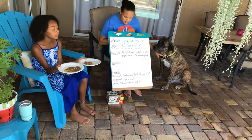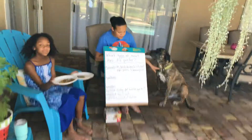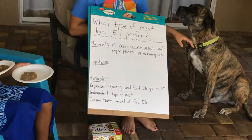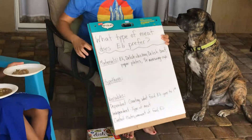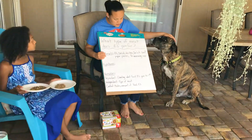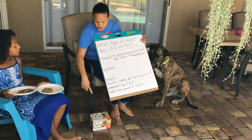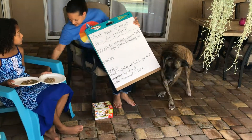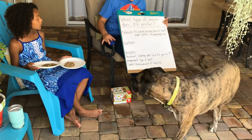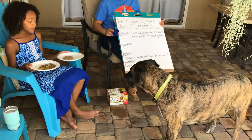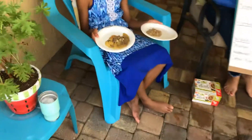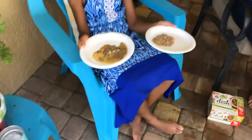So our question here is: what type of meat does Eli prefer? Our materials are Eli, the Delish Chicken and Beef. We also have paper plates that Payton is holding, and we have a one-fourth measuring cup.